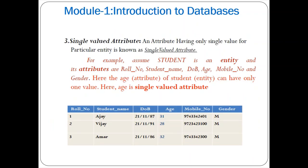The next type is single-valued attribute. An attribute having only a single value per particular entity is known as a single-valued attribute. For example, in a student entity with attributes role number, student name, date of birth, age, mobile number, and gender — the age attribute can have only one value and cannot be divided or derived, making it a single-valued attribute. Date of birth also qualifies as a single-valued attribute.